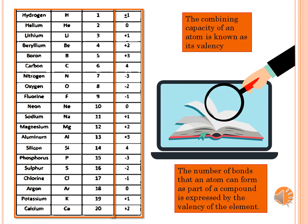Sodium equals +1. Magnesium equals +2. Aluminium equals +3. Silicon equals +4, -4. Phosphorus equals 3. Sulfur equals 2. Chlorine equals 1. Argon equals 0. Potassium equals +1. Calcium equals +2.